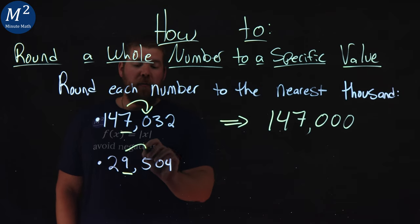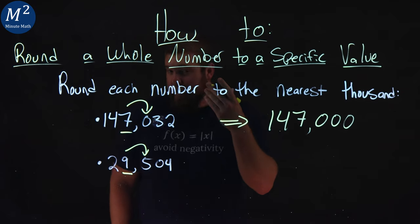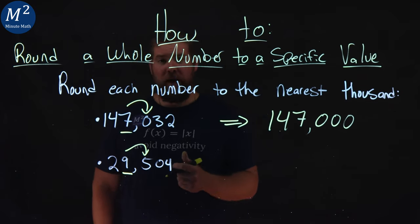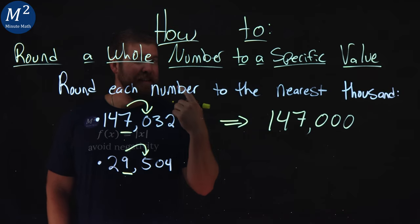To the right of that we see a 5. 5 is between and including 5 through 9, which means we round up. We take the 9, we round it up, and it's a 10.